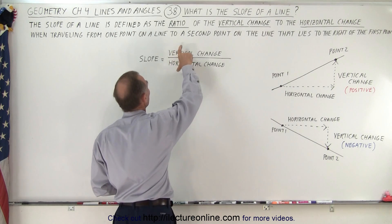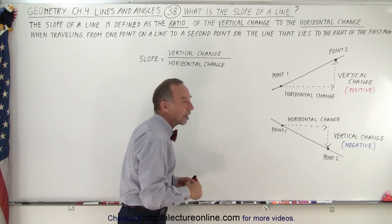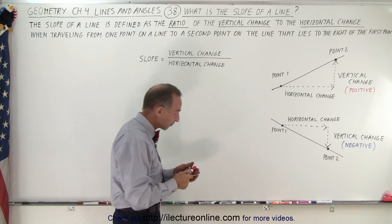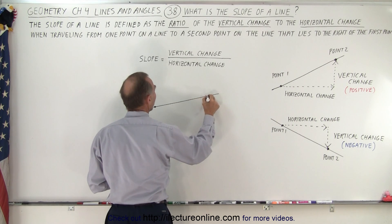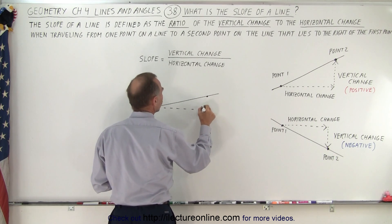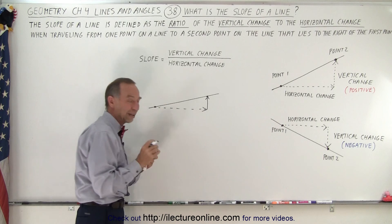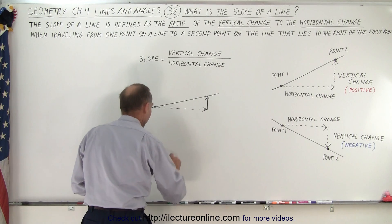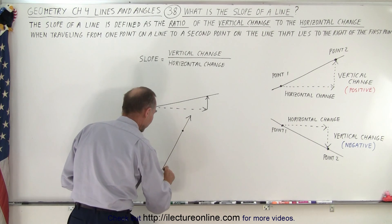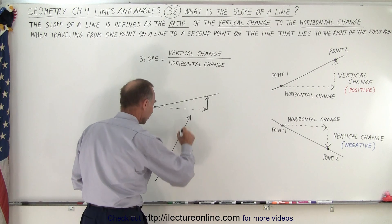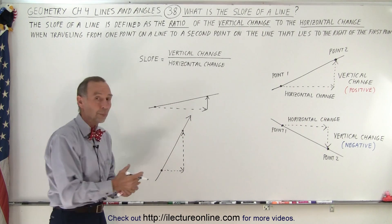We can define the slope as the ratio of how much change there is in the vertical direction compared to how much change there is in the horizontal direction. For example, if we take two points on a line and for a very large change in the horizontal direction there is only a very small change in the vertical direction, we have a very small slope. On the other hand, for a line where a relatively small change in the horizontal direction produces a very large change in the vertical direction, the slope is large.